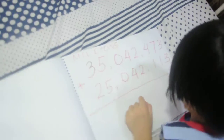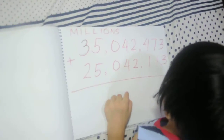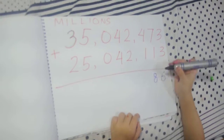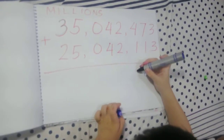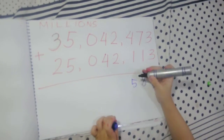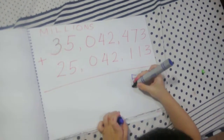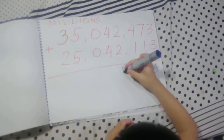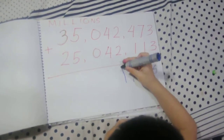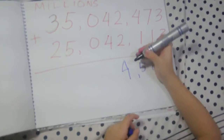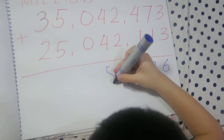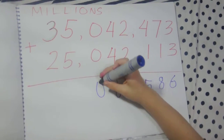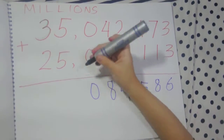3 plus 3 is 6. Then 7 plus 1 is 8. Then 4 plus 1 is 5. Then we will put 2 plus 2 is 4. And 4 plus 4 is 8. 0 plus 0 is 0.